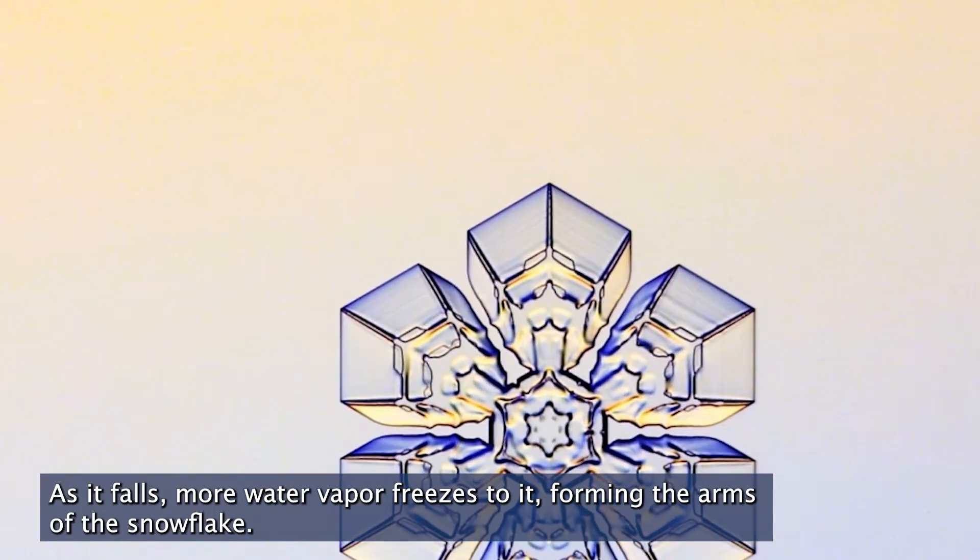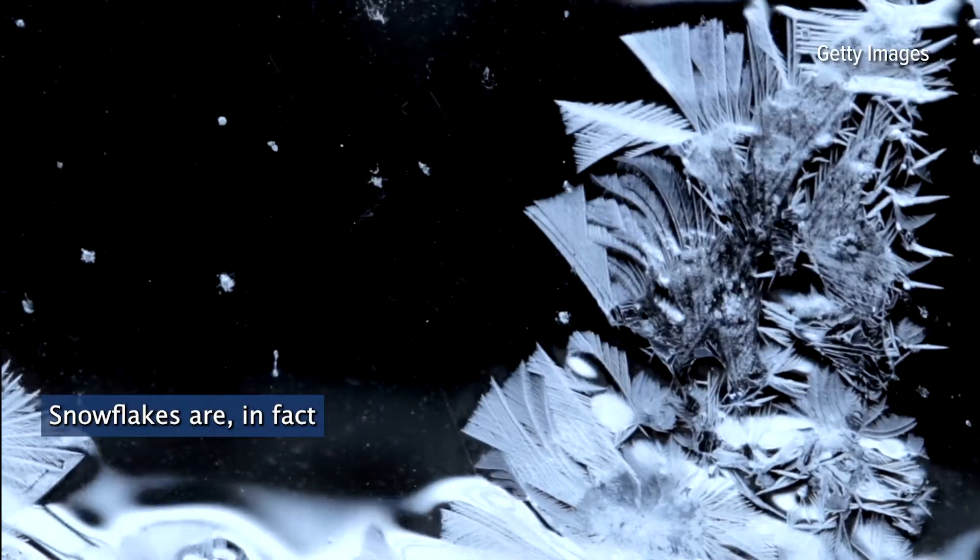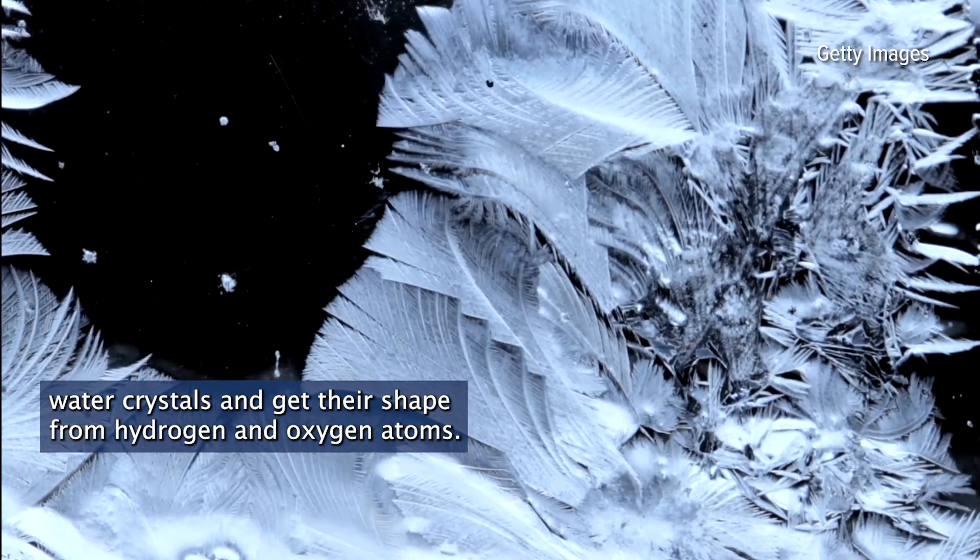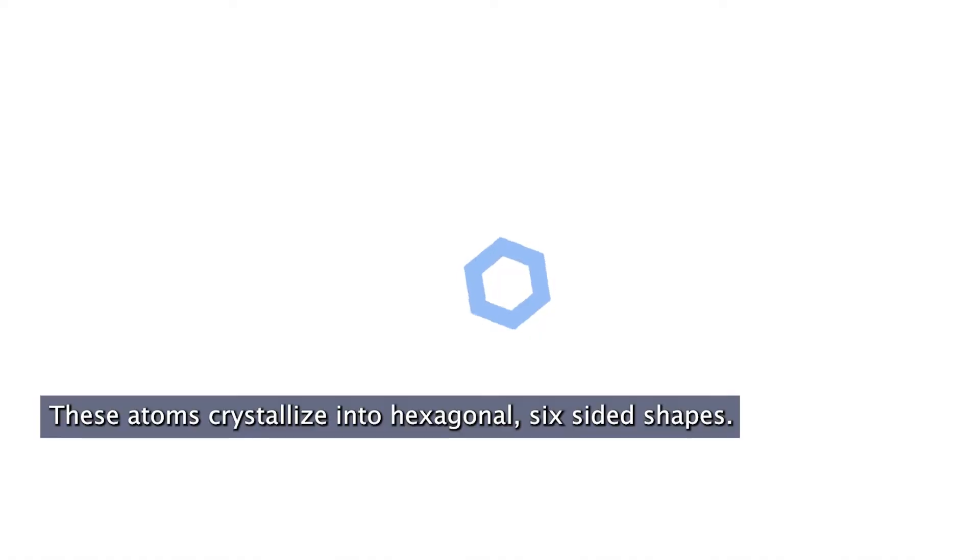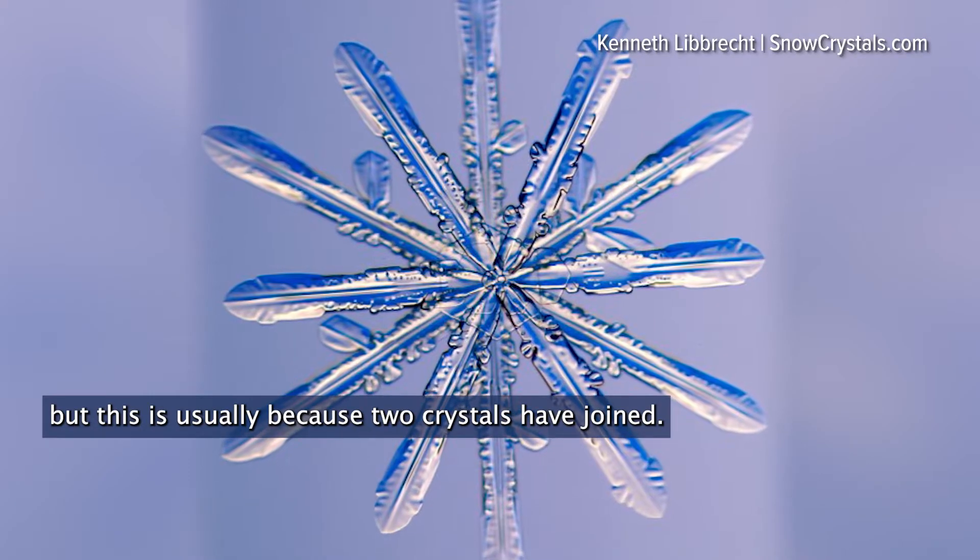As it falls, more water vapor freezes to it, forming the arms of the snowflake. Snowflakes are in fact water crystals and get their shape from hydrogen and oxygen atoms. These atoms crystallize into hexagonal, six-sided shapes. Twelve-sided crystals can also form, but this is usually because two crystals have joined.